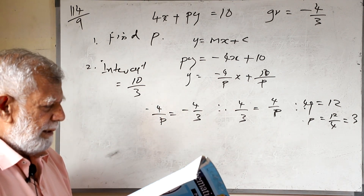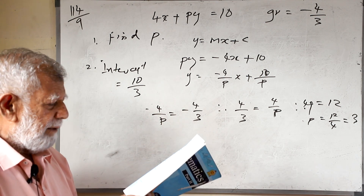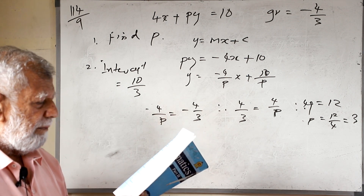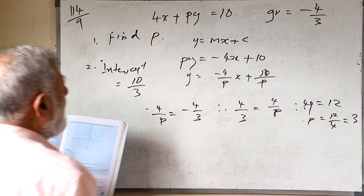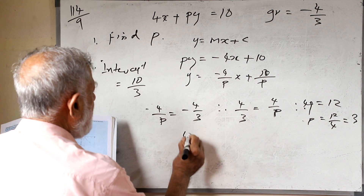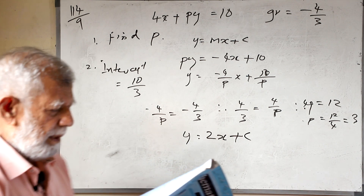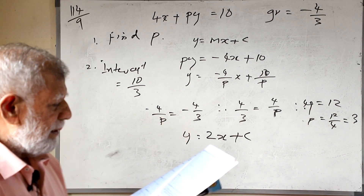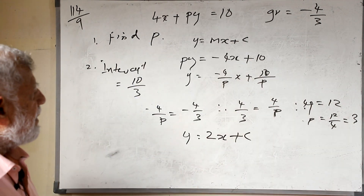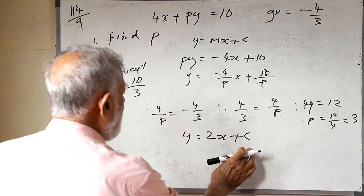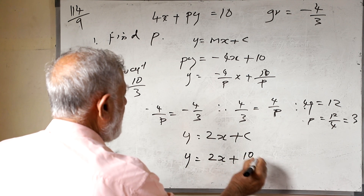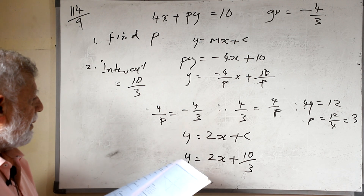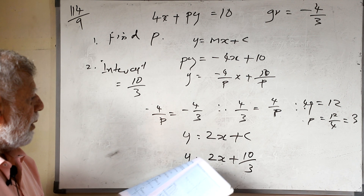They have told us to write the equation of the straight line with gradient minus 2, which passes through the point at which the above straight line intersects the y-axis. The y-intercept of the above line is 10/3, so c = 10/3. The required equation will be y = -2x + 10/3.